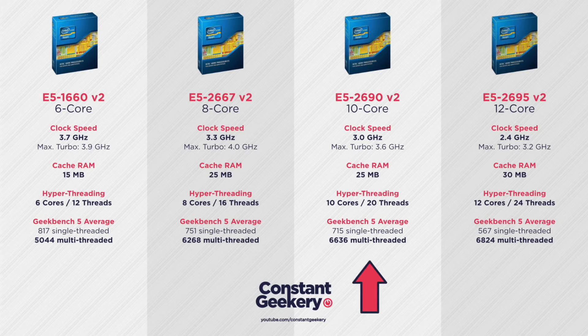The 10-core option is the 2690, running at 3 GHz with a 3.6 GHz turbo and 25 MB cache. Its performance is about the same as the 8-core for multi-threaded but gives away some single-threaded performance, making it hard to argue for over the 1680. These highlighted CPUs all have the same 130-watt power draw as Apple's standard choices. There are CPUs that draw 150 watts — avoid those. Lower-power CPUs might seem appealing for cooler running, but they sacrifice significant performance. The Mac Pro is designed for 130-watt CPUs, so that's the specification to target.